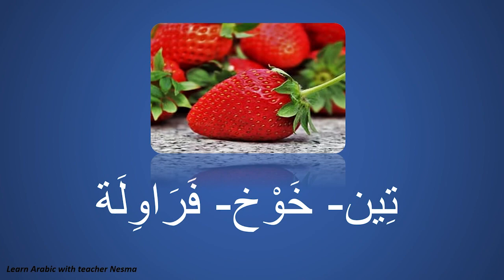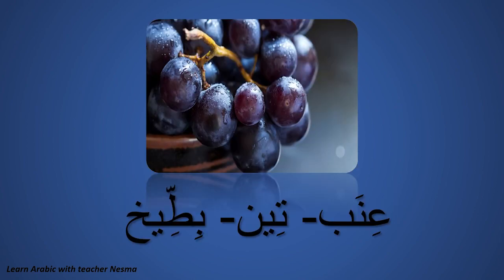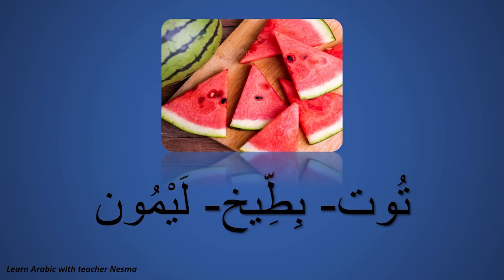Look at the picture and tell me which fruit is this — aya faakahatin haathih? Farawila — sāhiīh. Aya faakahatin haathih? Ineb aw tīn aw bittīkh — hazihi ineb. Aya faakahatin haathih? Tūt aw bittīkh aw laymoun — hāza bittīkh. Sāhiīh.